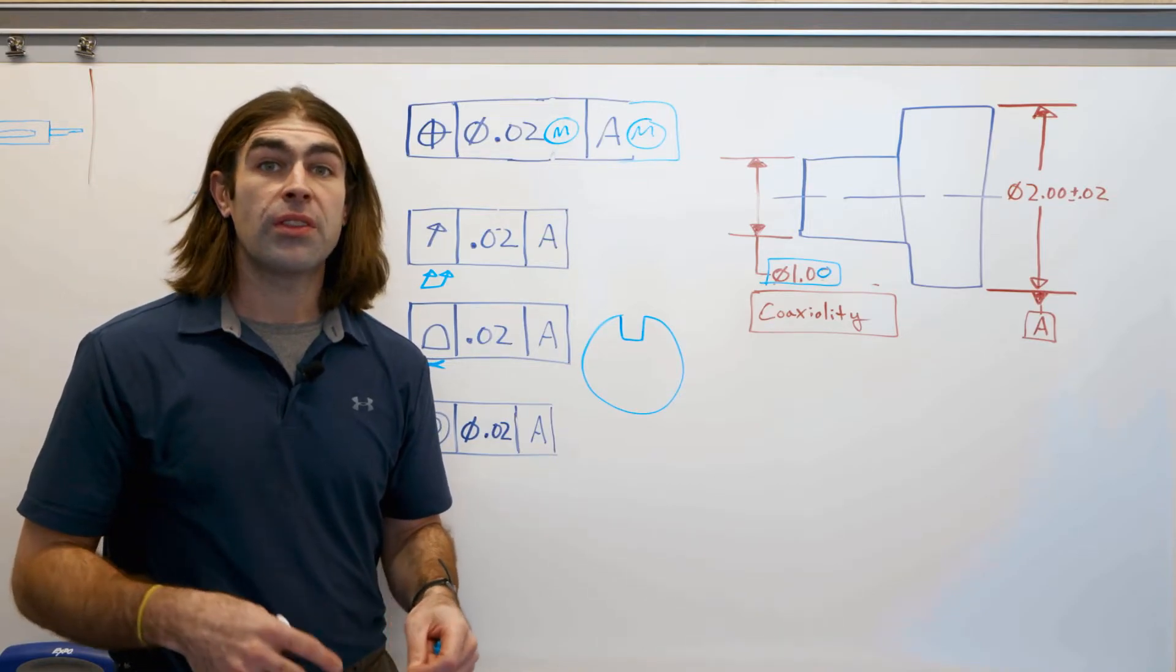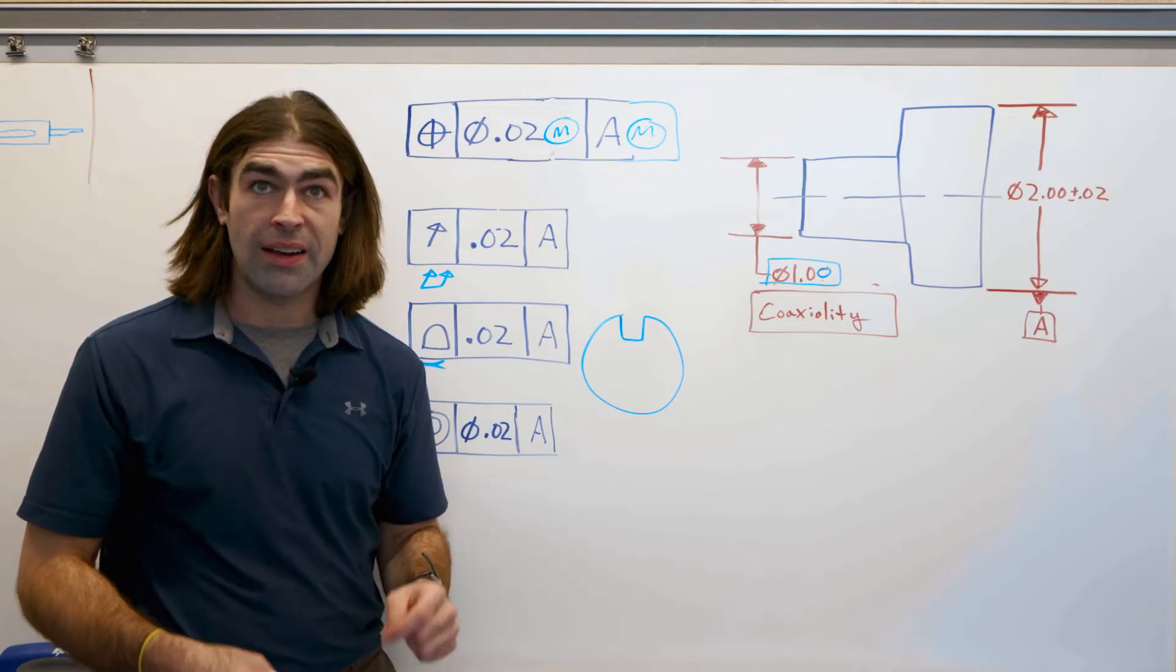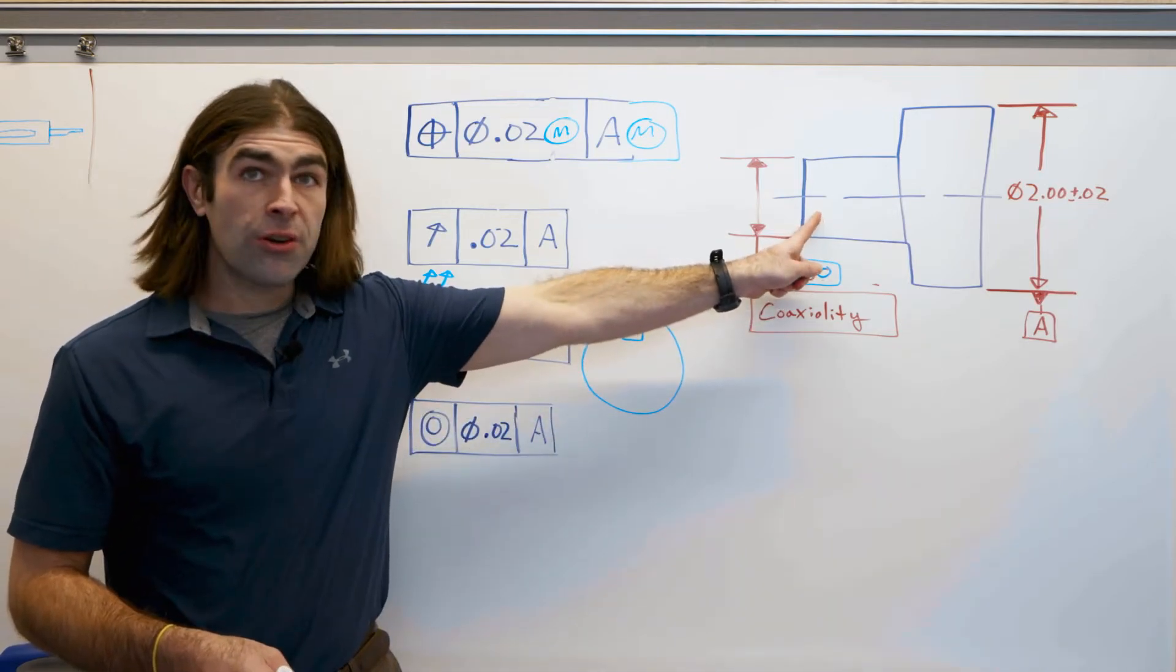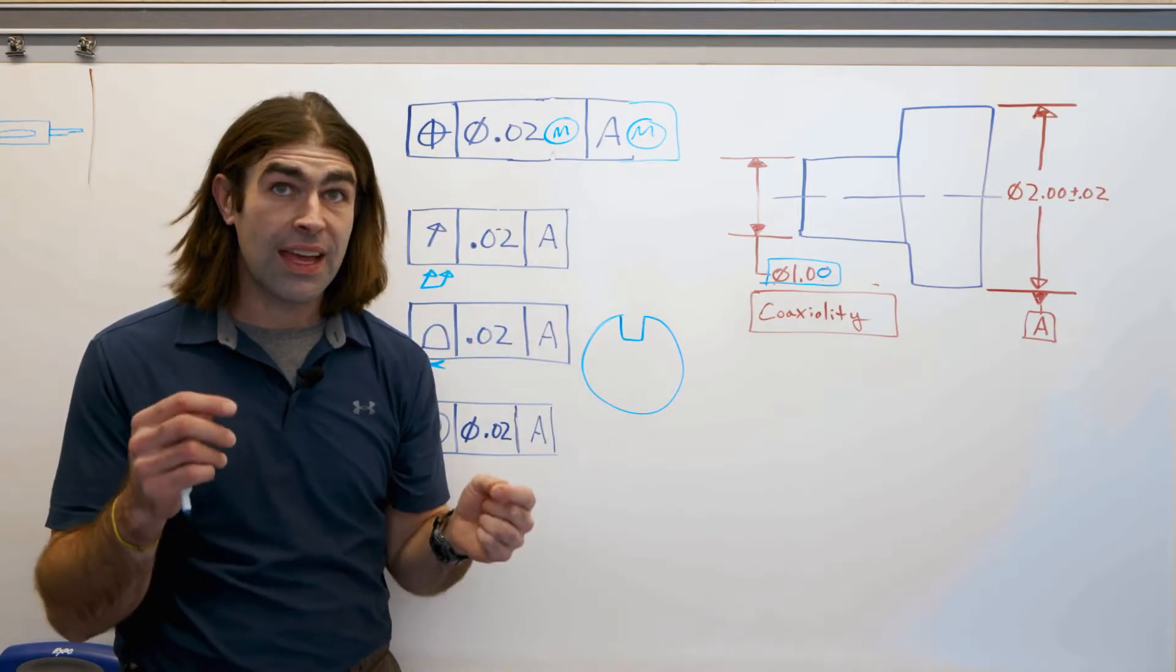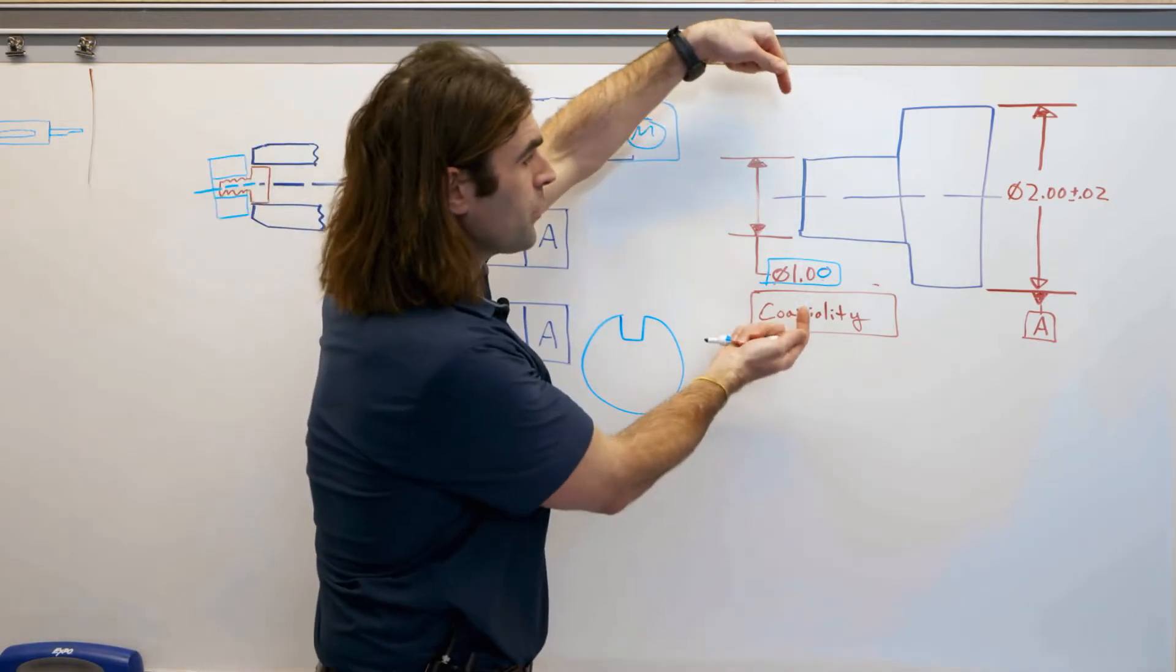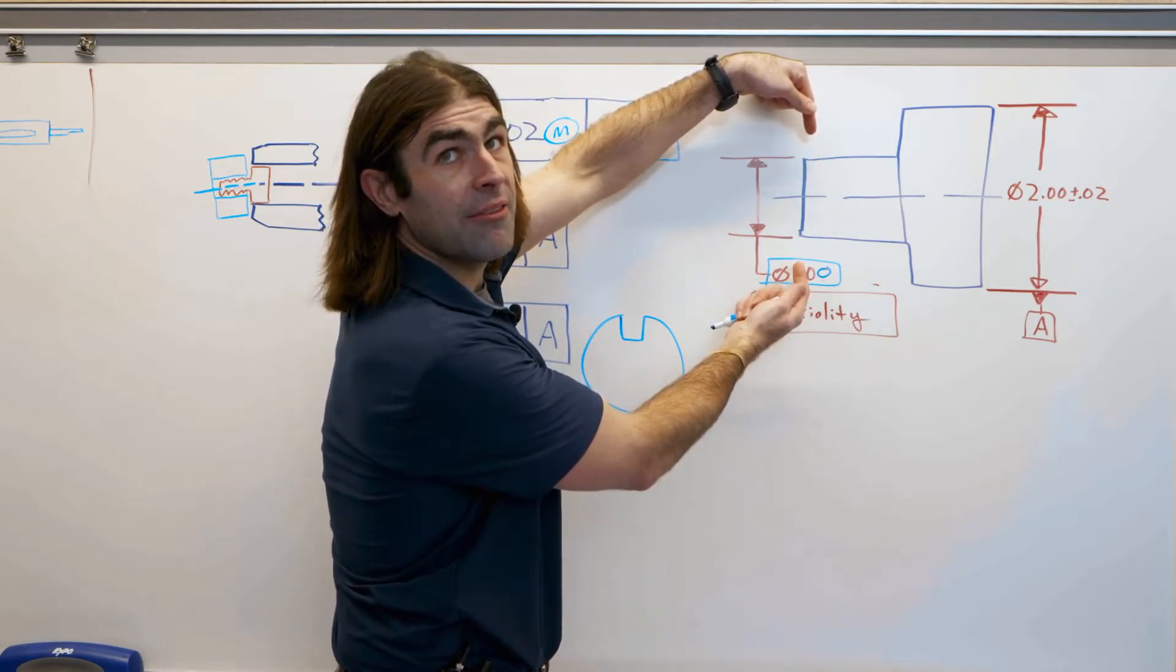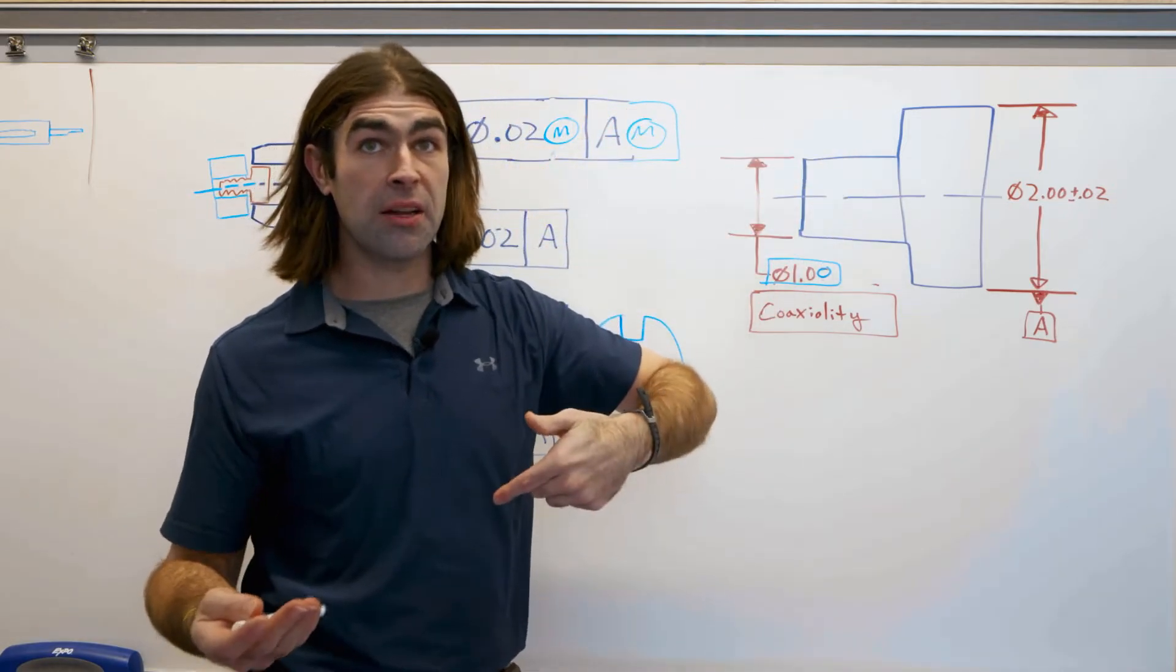Concentricity controls the derived median line of the feature to the datum axis. So a derived median line is gathered by taking all of the opposing points and finding out what the median point is.